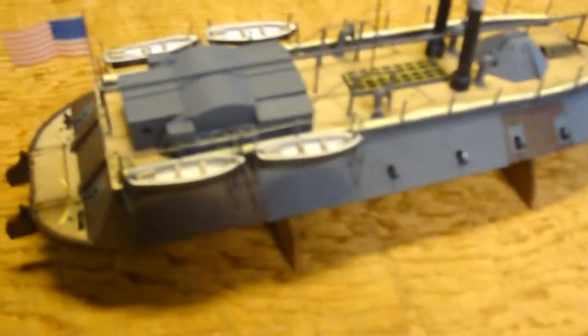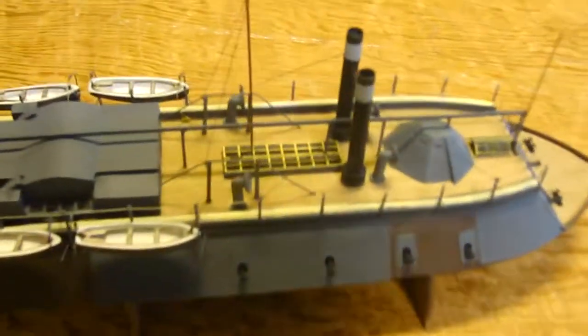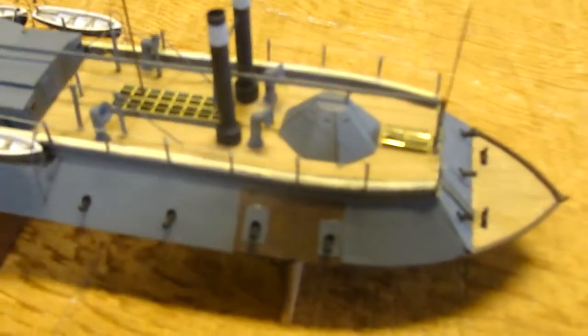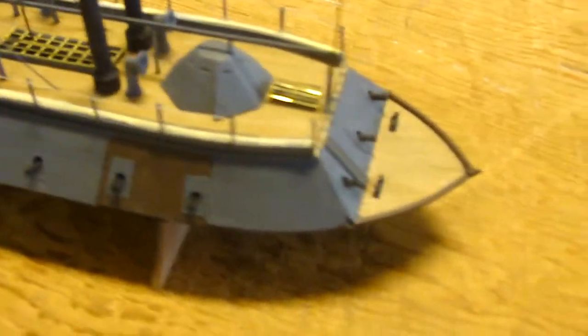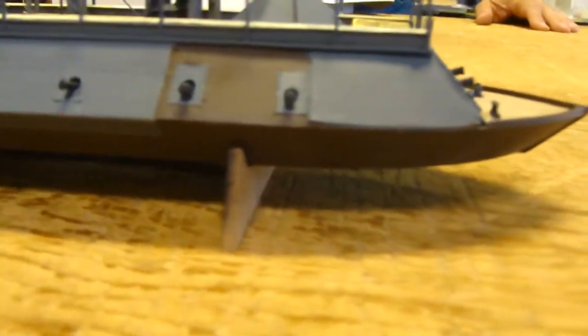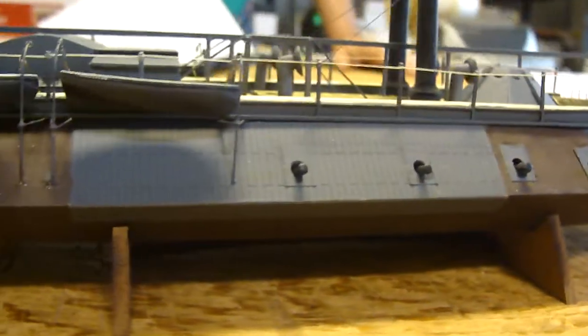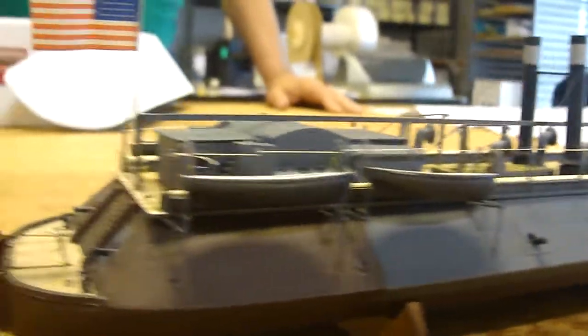She was launched in 1861 and she was the first of the city class of armor-clad gunboats that went up and down the Mississippi and Missouri rivers. She hit a mine and was sunk in December of 1862.